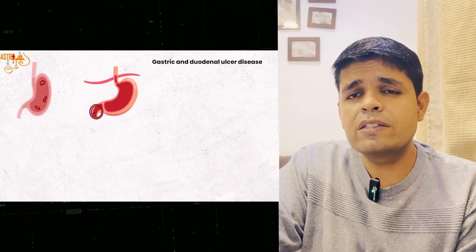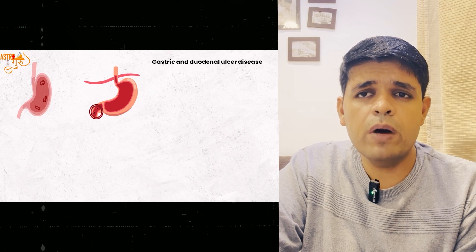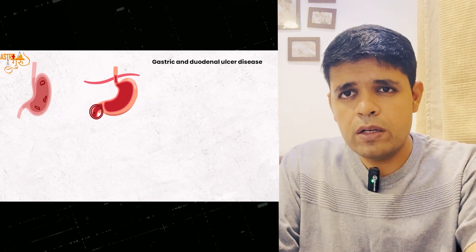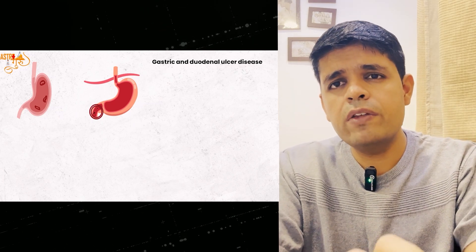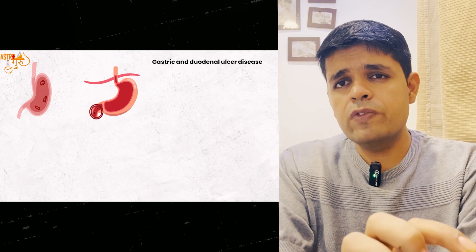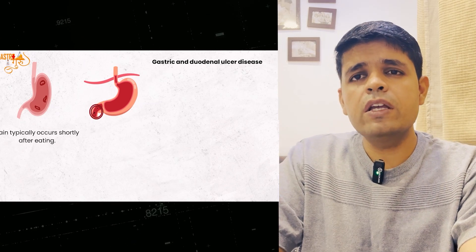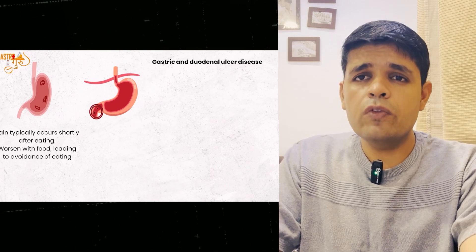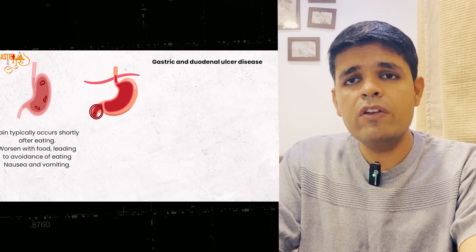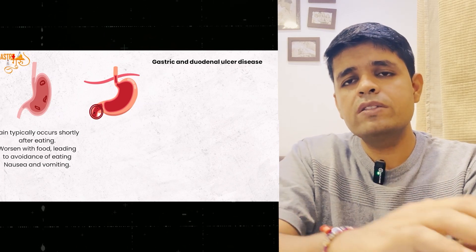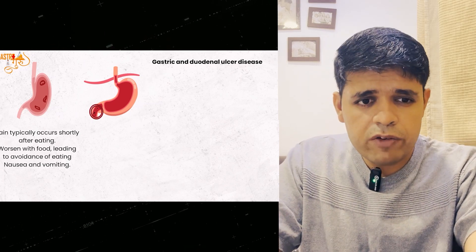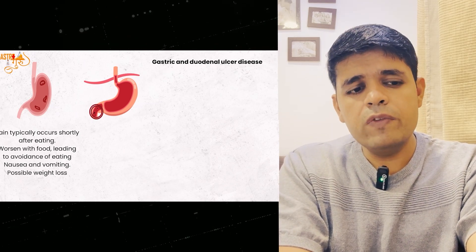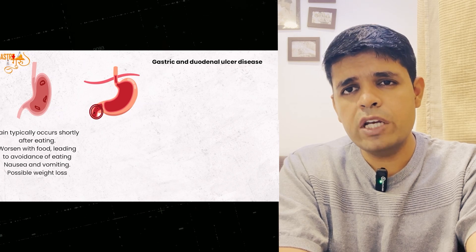How to differentiate between gastric and duodenal ulcers? For gastric ulcer, imagine an ulcer on your hand — when food touches it, it causes pain. Gastric ulcer pain usually starts shortly after eating and worsens with eating, leading to food avoidance and weight loss. Irritation of the stomach lining also causes more nausea and vomiting. So the pattern is: pain after eating, worsening after eating, food avoidance, more nausea and vomiting, and weight loss.